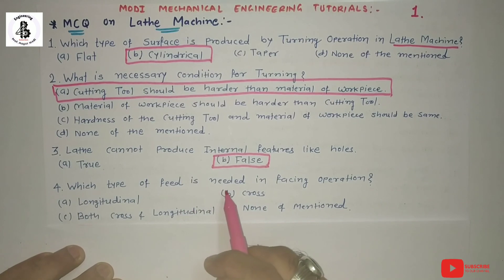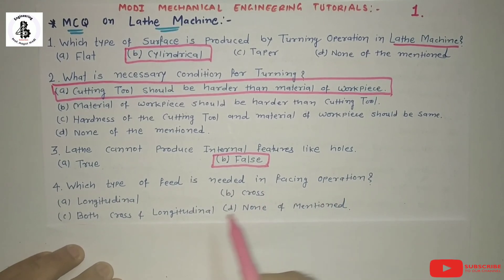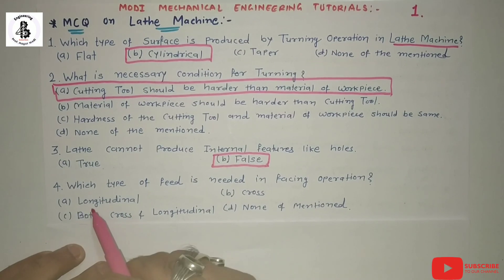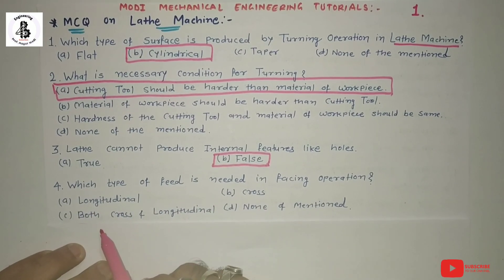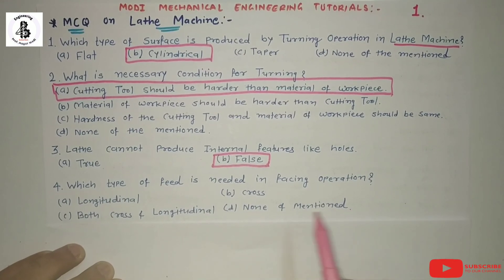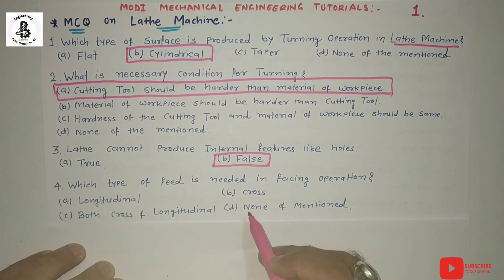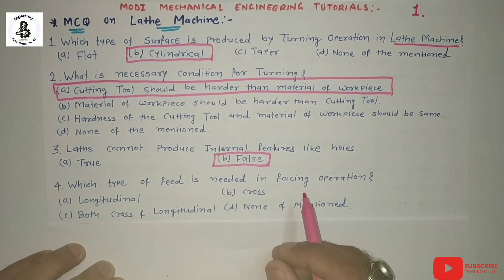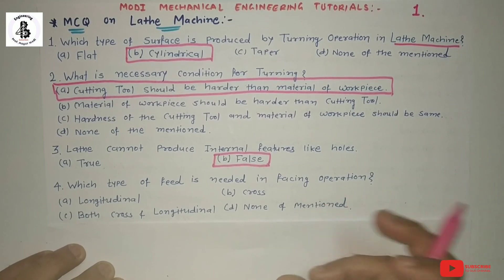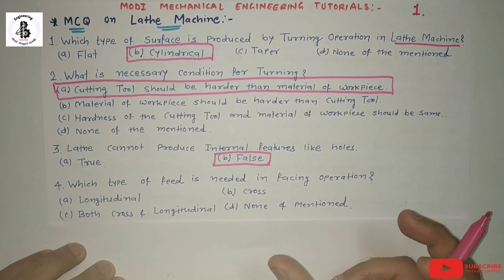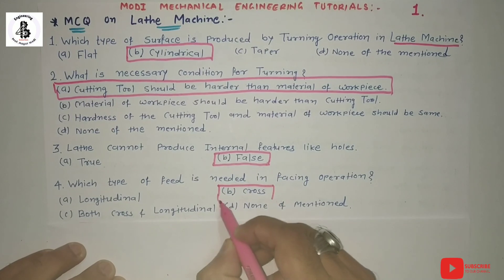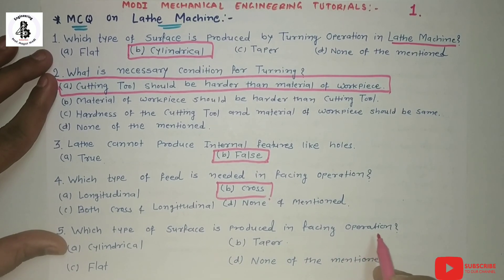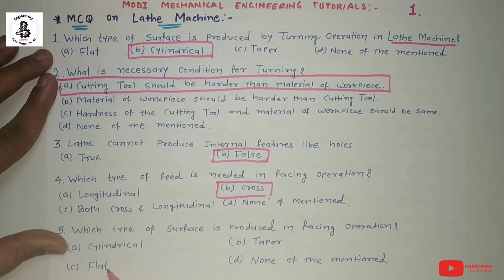The next question: which type of feed is needed in facing operations? Option A: longitudinal feed. Option B: cross feed. Option C: both cross and longitudinal. Option D: none of the above. In facing operations on the lathe machine, cross feed is always required, because in facing operations the length of the job is being reduced, not the diameter. So to decrease the length of the job in facing operations, cross feed is required.